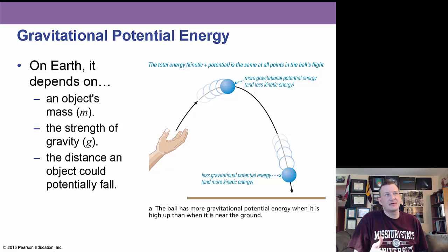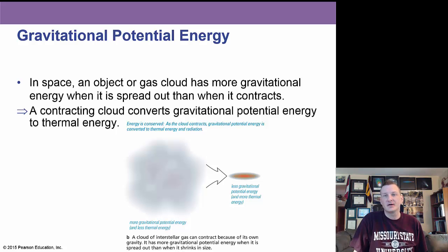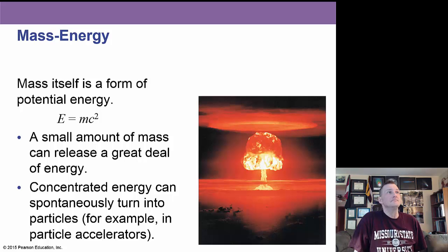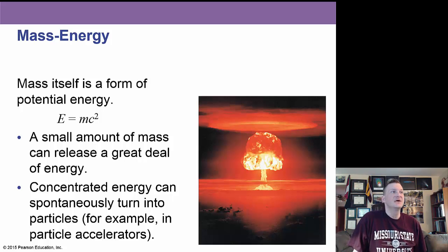Gravitational potential energy on Earth depends on an object's mass, the strength of g (9.8 or 10 meters per second squared), and the distance an object could potentially fall. In space, a gas cloud has more gravitational potential energy when spread out than when it contracts, and a contracting cloud converts gravitational potential energy into thermal energy. Mass itself is a form of potential energy — Einstein's equation E equals MC squared, where C is the speed of light at 300 million meters per second. A small amount of mass can release a great deal of energy, like a nuclear bomb.